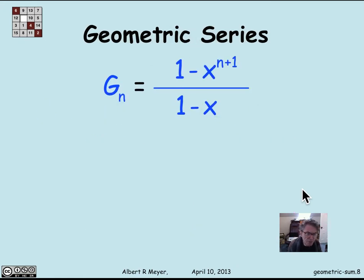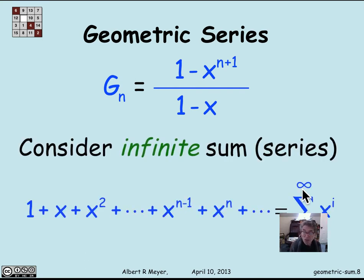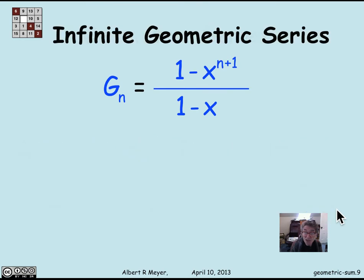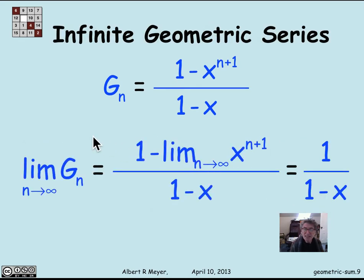A geometric series — I use the word 'sum' for a finite sum — is when you take an infinite sum. The infinite geometric series is 1 plus x plus x squared, continuing forever: the sum from i equals 0 to infinity of x to the i. There's a simple — actually even simpler — formula for that. The definition of an infinite sum is the limit of the truncated sums: the limit as n goes to infinity of the sum of the first n terms, assuming that limit exists.